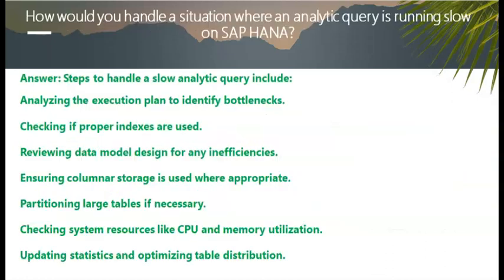How would you handle a situation where an analytic query is running slow on SAP HANA? Steps to handle a slow analytic query include: analyzing the execution plan to identify bottlenecks, checking if proper indexes are used, reviewing data model design for any inefficiencies, ensuring columnar storage is used where appropriate, partitioning large tables if necessary, checking system resources like CPU and memory utilization, and updating statistics and optimizing table distribution.